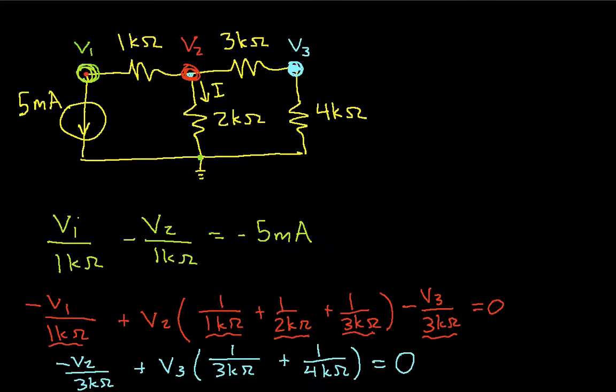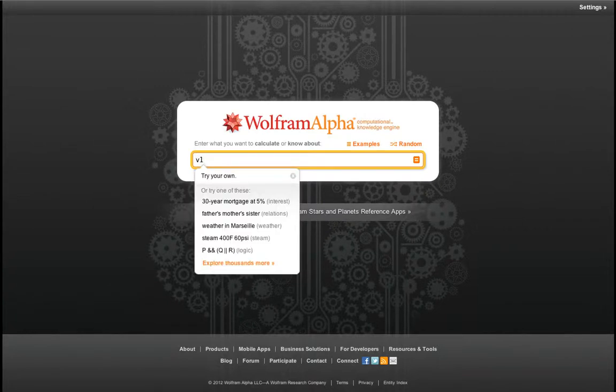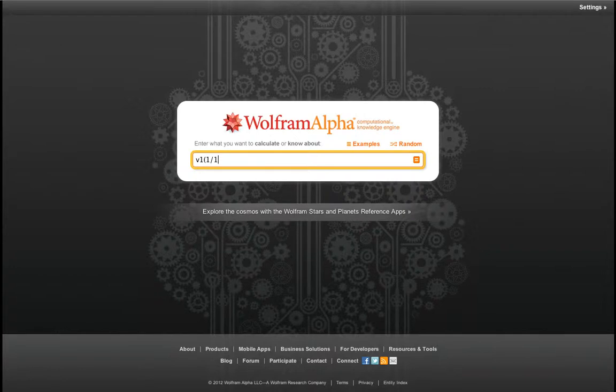And we have 1 over 1kΩ for V1. V2 has a coefficient of minus 1 over 1kΩ. It's in minus 5 milliamps. We'll put this into WolframAlpha. We have V1 times 1 over 1kΩ, which is 1,000Ω, minus V2 times 1 over 1kΩ. And this is equal to minus 5 milliamps. Okay, so that's our first equation.